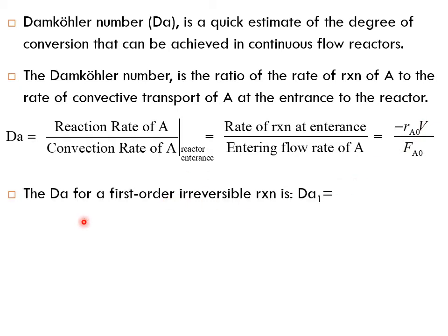So let's try this out on a first-order irreversible reaction. The Damköhler number DA1, where 1 refers to the first-order reaction, becomes minus rA0 times V. And we know for a first-order reaction, minus rA0 equals k times CA0. Times V divided by FA0, which can be written as v0 times CA0. The CA0 cancels out, and you get V over v0, which is τ (tau), multiplied by k.